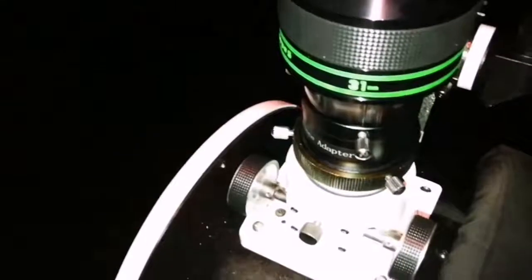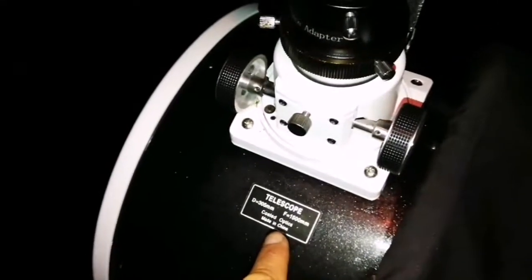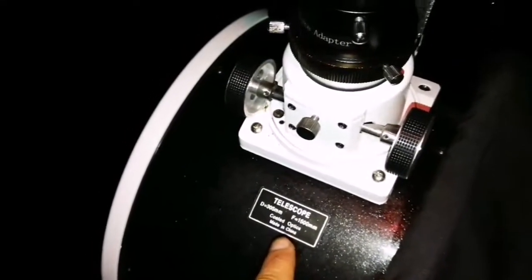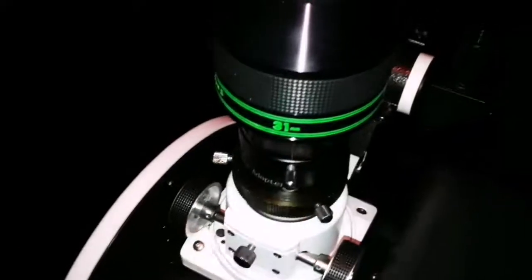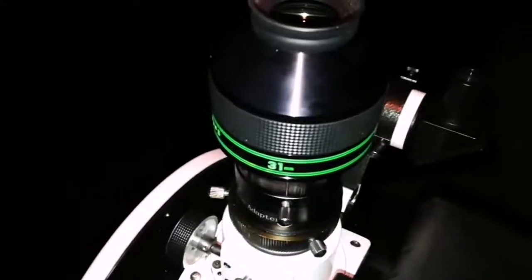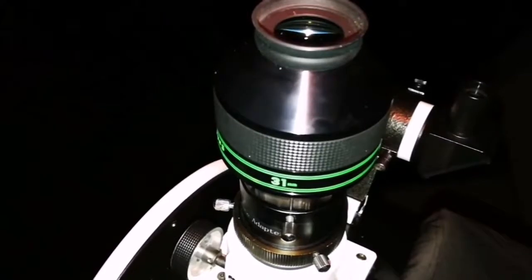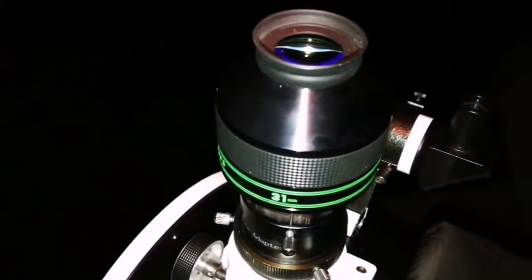The telescope I'm using is the Skywatcher Skyliner 300P, 12-inch Dobsonian telescope. Focal length is 1500, divided by 31 gives a low magnification of 41. I could have used the Max Vision 68 degrees 40 millimeter which would give me a slightly wider field of view.